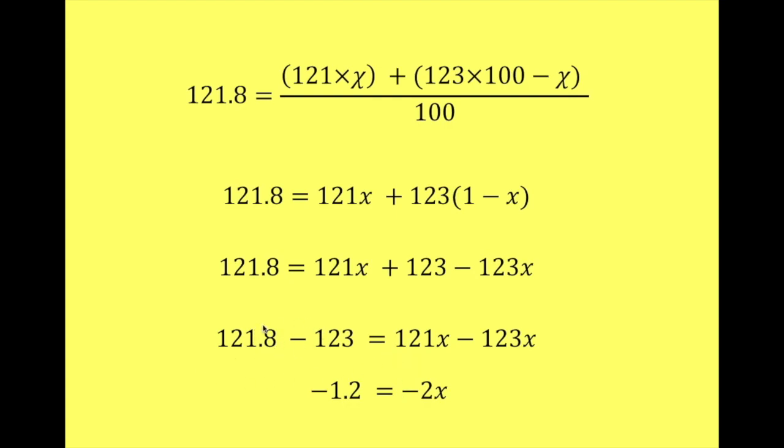So when you take away 123 from 121.8, you're going to get minus 1.2. And then if you take 121x from 123x, you're going to be left with minus 2x. Now you're left with an equation which you'd be very familiar with, with three parts in and a multiplication there.